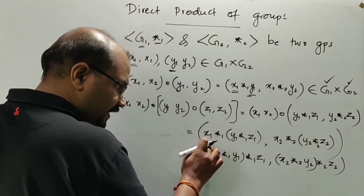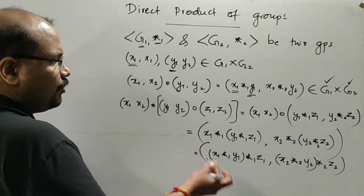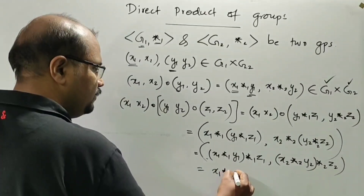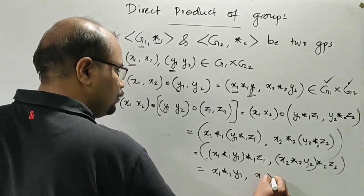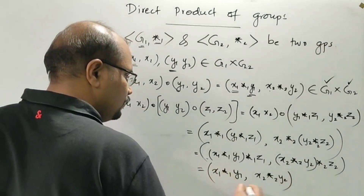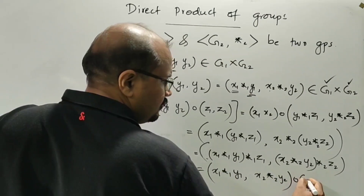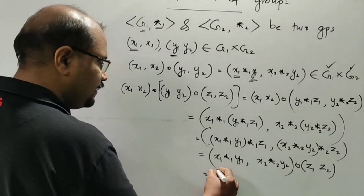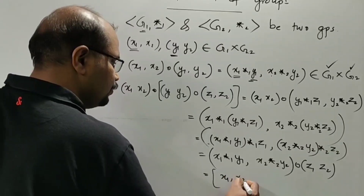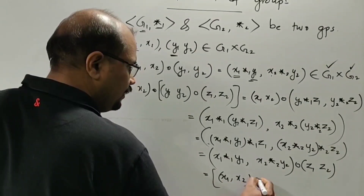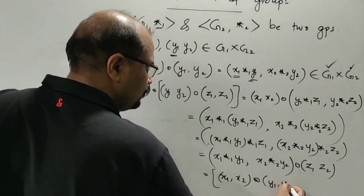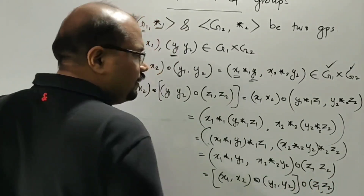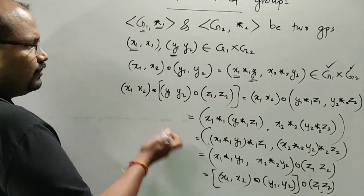Therefore we can rewrite this as ((x1 star1 y1) star1 z1, (x2 star2 y2) star2 z2), which is the same as (x1 star1 y1, x2 star2 y2) dot (z1, z2), and that equals (x1, x2) dot (y1, y2) dot (z1, z2). Therefore this operation is associative.